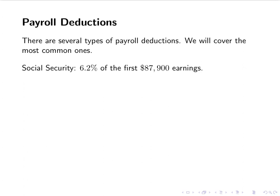The first is Social Security. Social Security is 6.2% of the first $87,900 in earnings. For simplicity's sake, we're going to assume that no one has reached those earnings yet when we find their Social Security deduction. This is just a basic percent equation — what is 6.2% of whatever their earnings is?